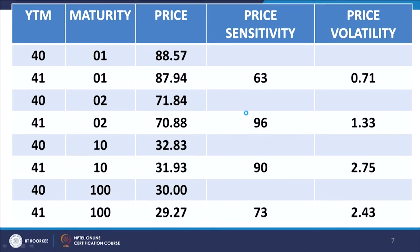Both price sensitivity and price volatility increase initially: 63 for 1-year maturity, 96 for 2-year maturity, then 90 for a 10-year bond — it starts decreasing. This is the discount bond: YTM is 40 percent and coupon rate is 12 percent, so it is a massively discounted bond. The sensitivity for a 100-year bond is 73, which is a limiting value. Price volatility similarly increases from 0.71 to 1.33 to 2.75 then decreases to 2.43 for the 100-year bond.